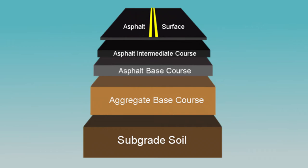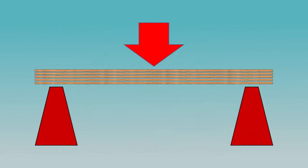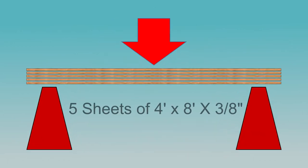If the layers are not properly bonded, the structure's performance is greatly reduced and the life of the pavement will be less than optimal. For an example, consider what happens to a stack of five sheets of 3/8-inch plywood.